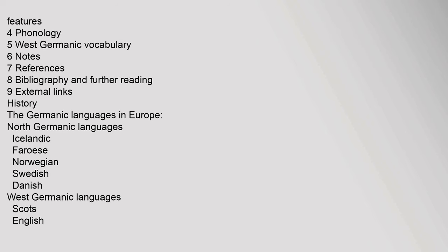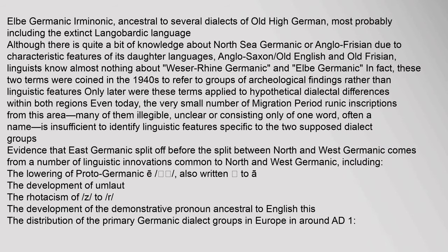The Germanic languages in Europe include North Germanic languages and Elbe Germanic, ancestral to several dialects of Old High German, most probably including the extinct Langobardic language. Although there is quite a bit of knowledge about North Sea Germanic, or Anglo-Frisian, due to characteristic features of its daughter languages — Anglo-Saxon, Old English, and Old Frisian — linguists know almost nothing about Lower-Rhine Germanic and Elbe Germanic.